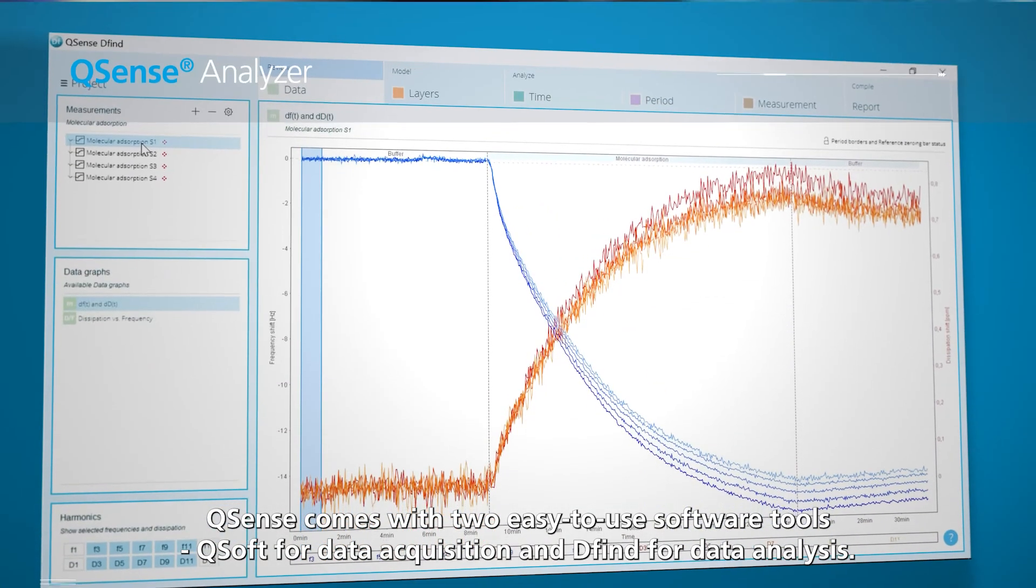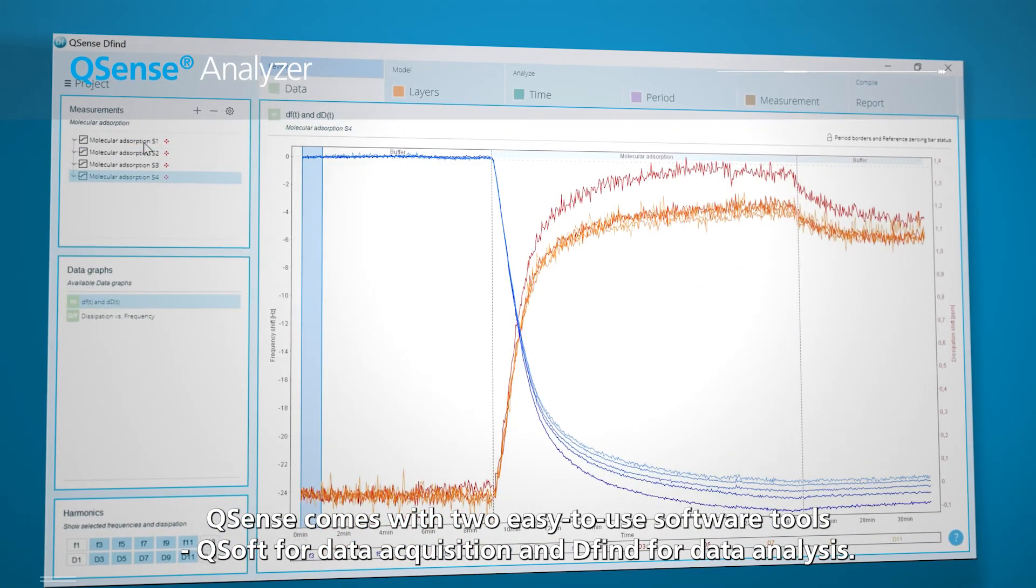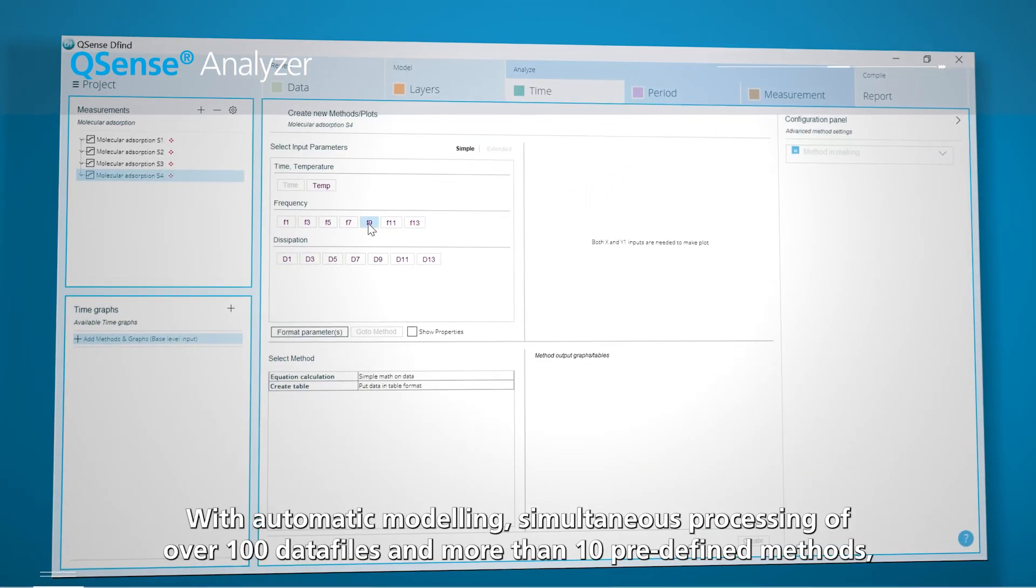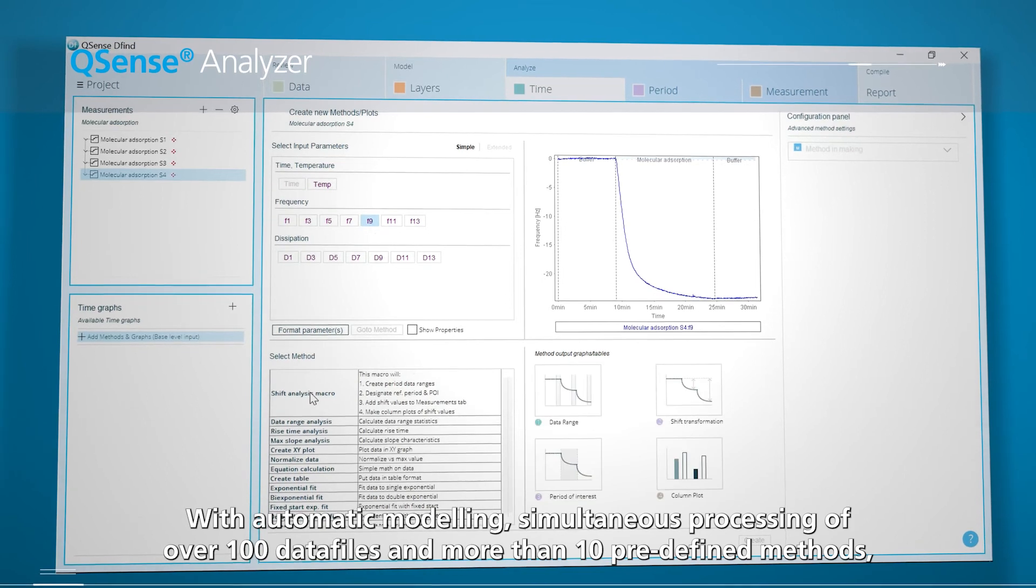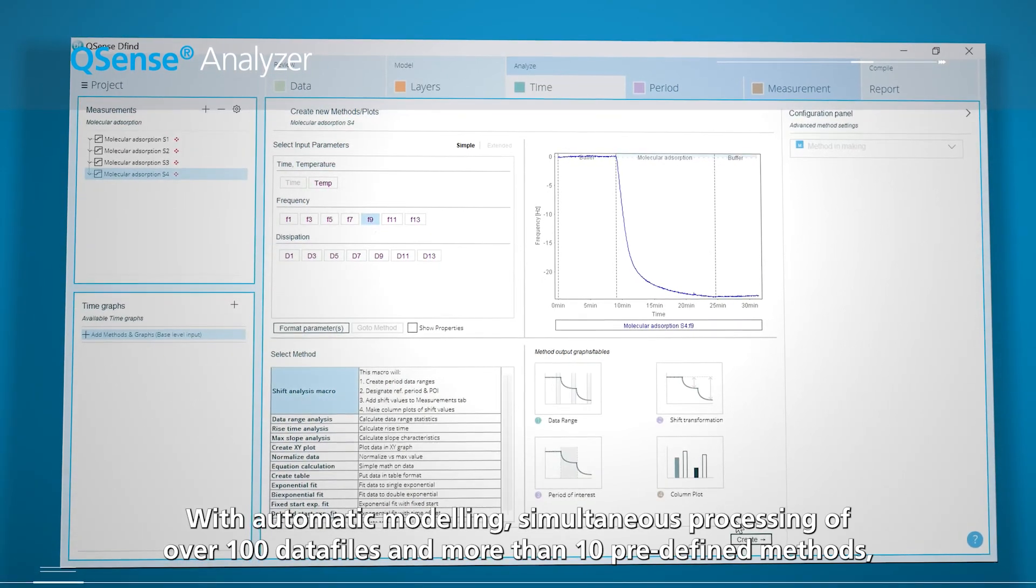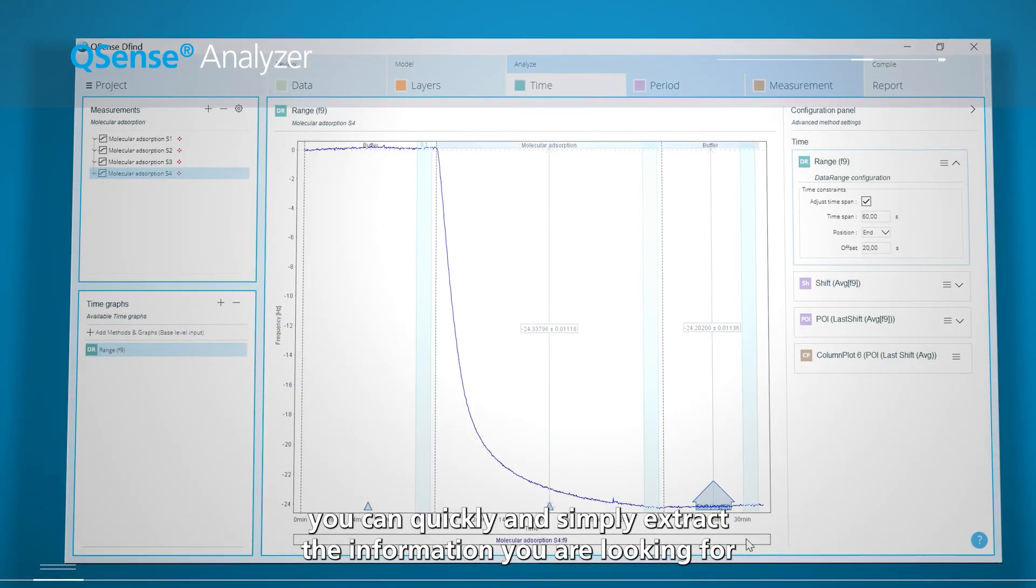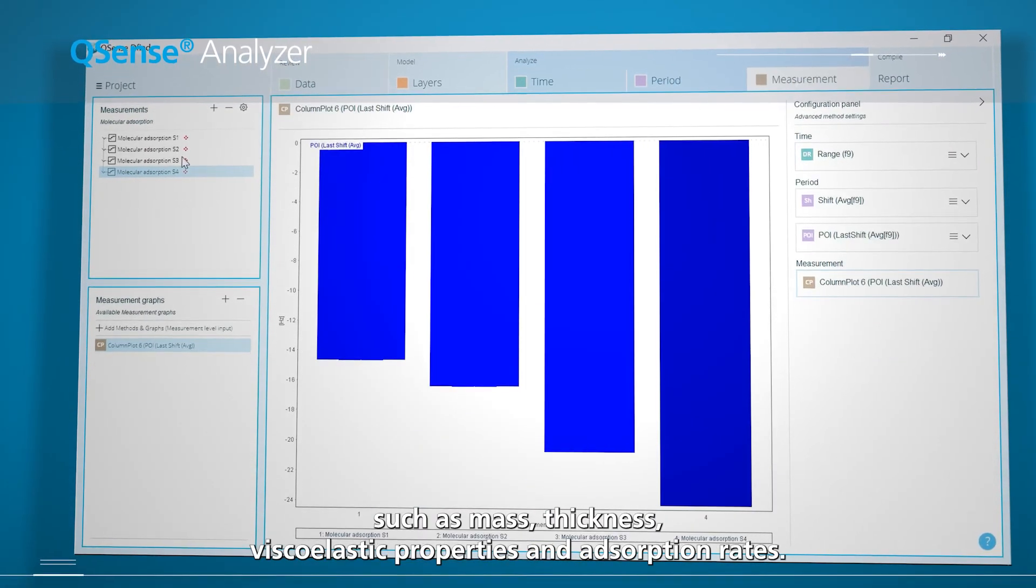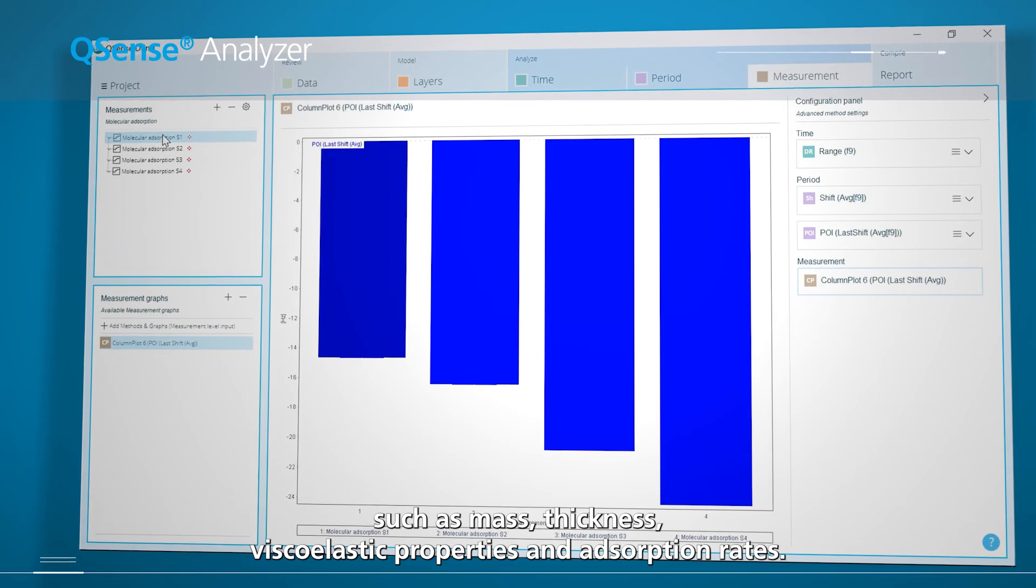QSense comes with two easy-to-use software tools: QSoft for data acquisition and DFind for data analysis. With automatic modeling, simultaneous processing of over 100 data files and more than 10 predefined methods, you can quickly and simply extract information you are looking for, such as mass, thickness, viscoelastic properties and adsorption rates.